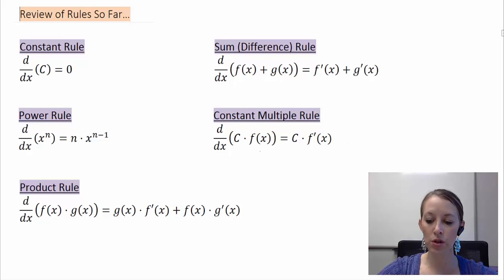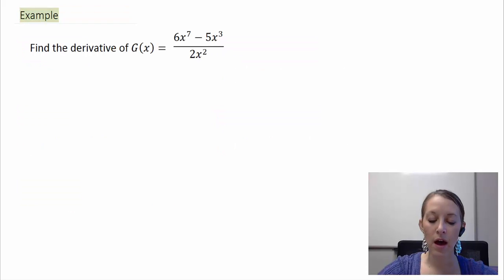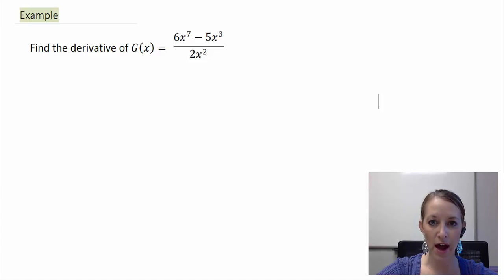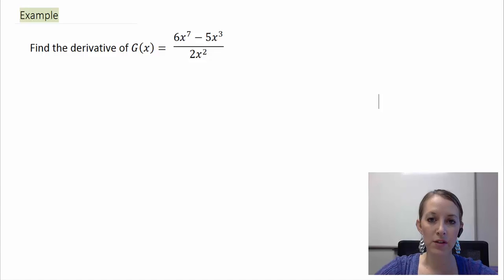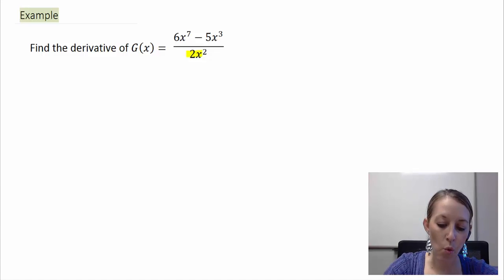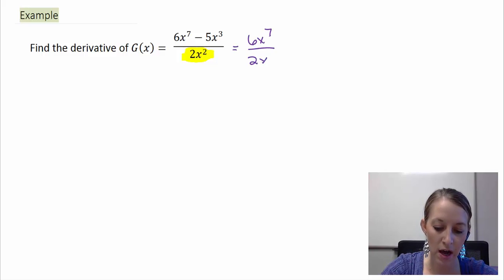Before I introduce the rule, let us do an example of how we handle it without knowing the quotient rule. We have a fraction: g of x equals 6x to the seventh minus 5x to the third, all over 2x squared, and we want to take the derivative. We can't take the derivative of it as is, so we have to manipulate it first. Since we only have one denominator, we can write each of the numerator terms over the denominator individually.